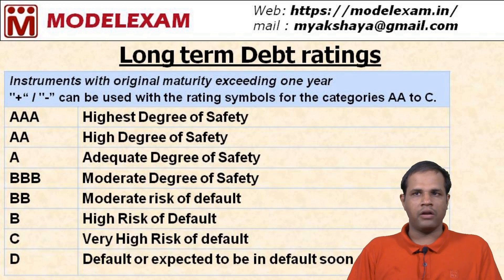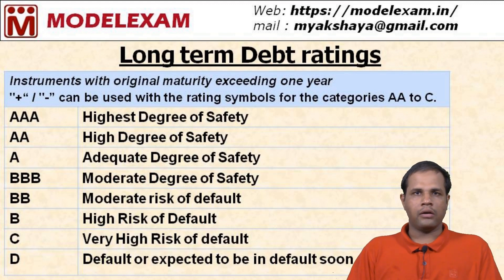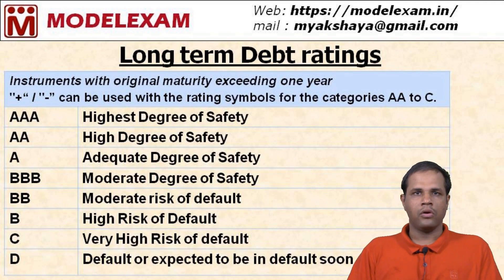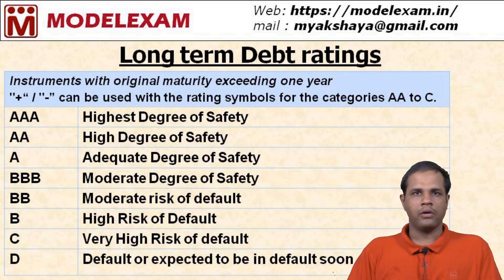Plus or minus symbols, known as modifiers, can be used with rating categories. For example, it can be AAA plus or AAA minus. AAA minus is better than AA plus, and AA minus is better than A plus. These modifiers distinguish ratings within a particular category such as AAA plus, AAA, or AAA minus. This concludes long-term debt ratings.